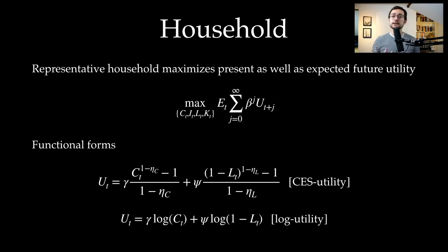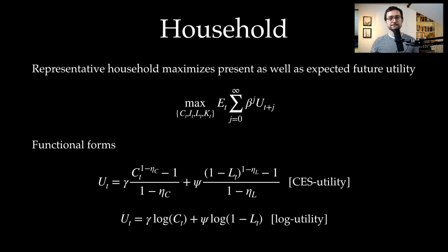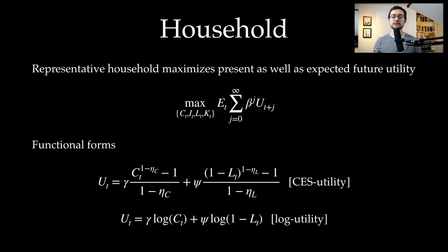Gamma and psi are utility parameters that assign weight to utility from consumption or from leisure, since one minus L_T is the time the household does not work. The normalization used here is that working eight hours a day means L equals one-third. Eta_C is the coefficient of relative risk aversion — its inverse is the intertemporal elasticity of substitution. Eta_L, or more precisely minus one over eta_L, determines the elasticity of labor with respect to the wage. Setting eta_C and eta_L to one is equivalent to the log utility function, as the marginal utilities are the same.